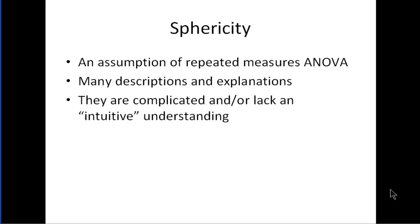There are many descriptions and explanations of sphericity, but in my opinion, they tend to be complicated or they lack an intuitive understanding. That is, once you see how the calculations are performed or it's explained to you, you don't really understand why that assumption would be important for repeated measures ANOVA, but not in the between-groups ANOVA.